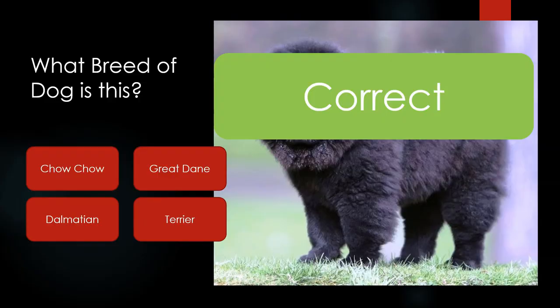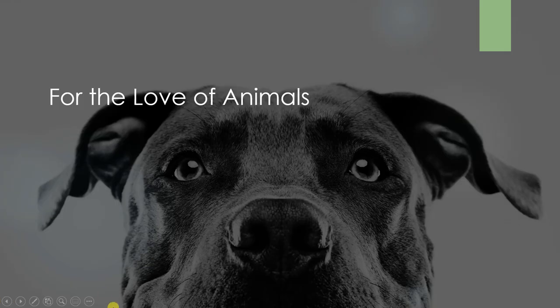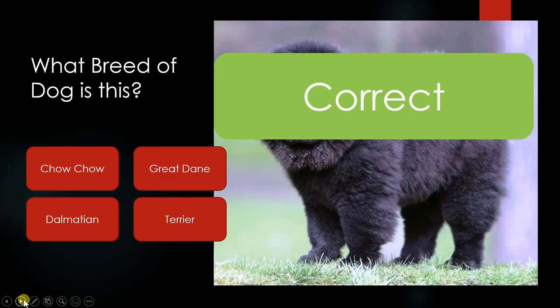The idea is when I click on 'Chow Chow' — the correct answer — 'correct' appears. Just to prove the point, if I run the presentation you can see it comes up 'correct'. But the problem is if I click anywhere, 'correct' appears — I want it to only appear when I click specifically on Chow Chow.